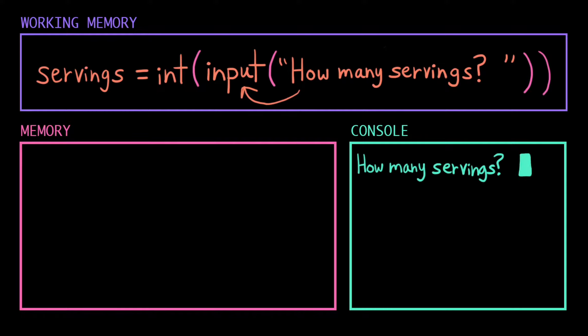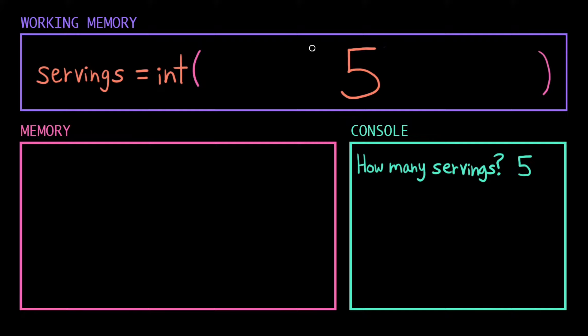The computer is done with this part of the instruction, but it won't continue evaluating until it gets an answer back from the user. Let's say I type in 5 and hit enter. Where does that 5 go? Well, the input function returns out whatever value the user entered. Remember that the input function always returns that entered value as a string, so this isn't the integer 5, it's the string 5.